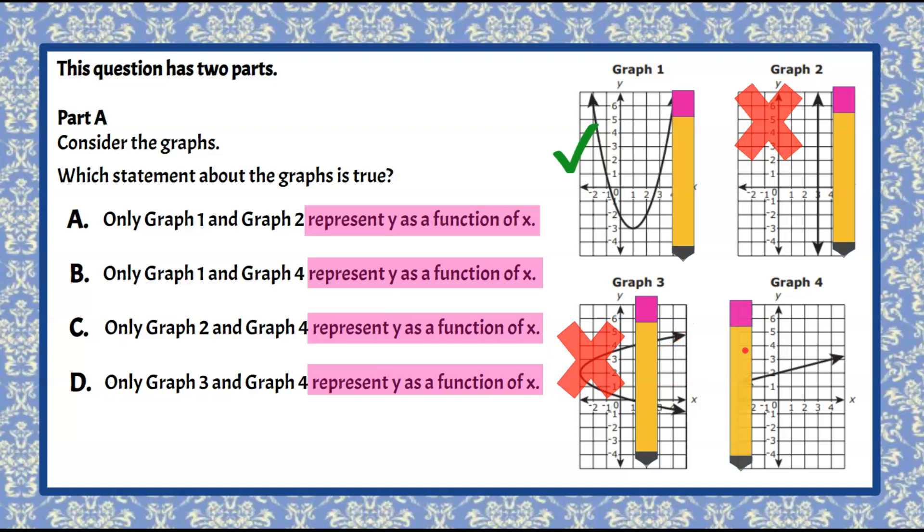And then graph four as I pass my pencil vertically left to right, I can see it's only ever going to pass through one point on the graph at a time. It passes and graph four is a function.